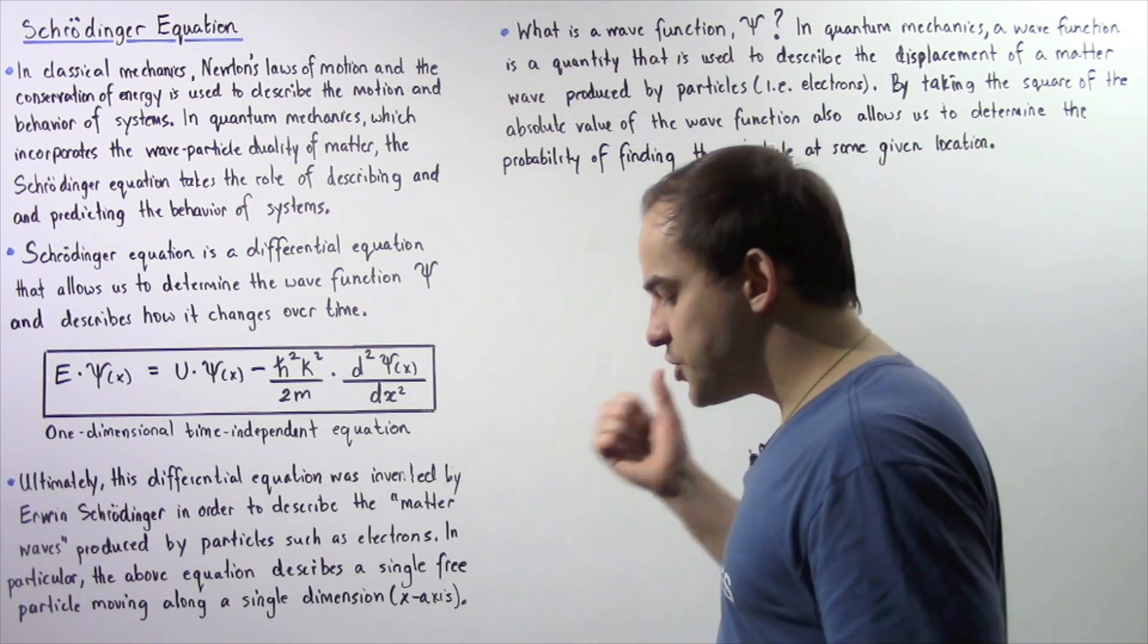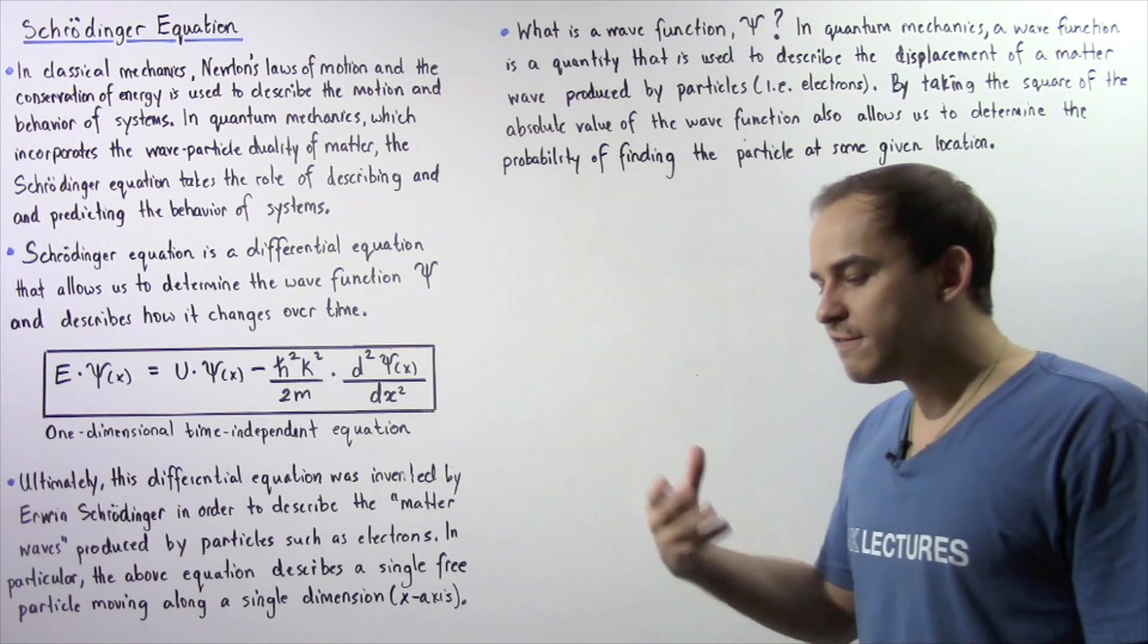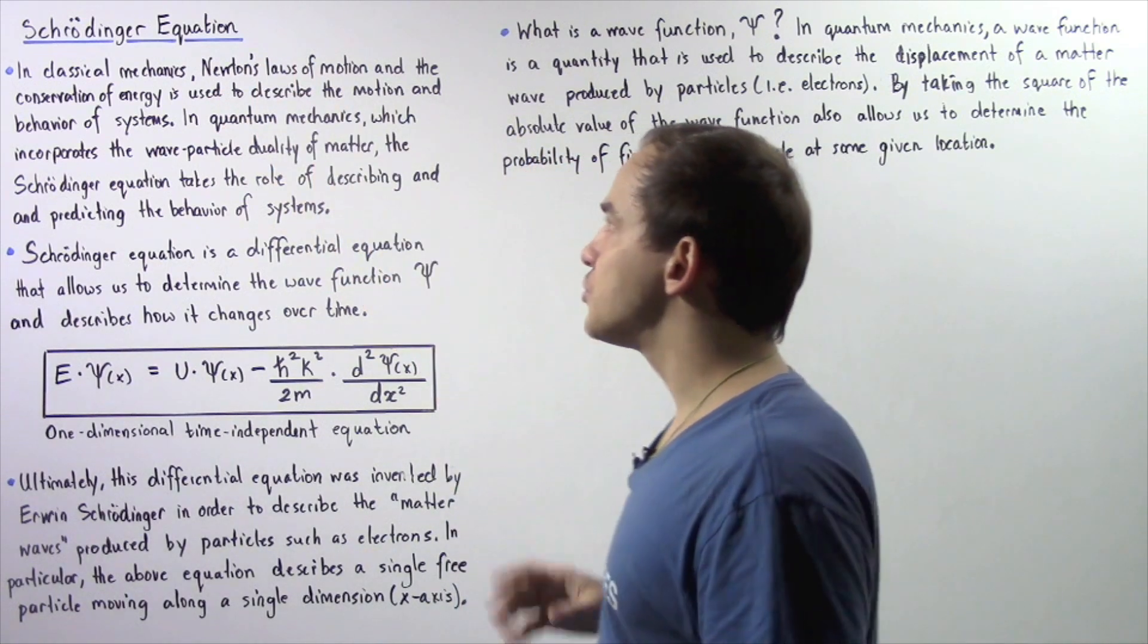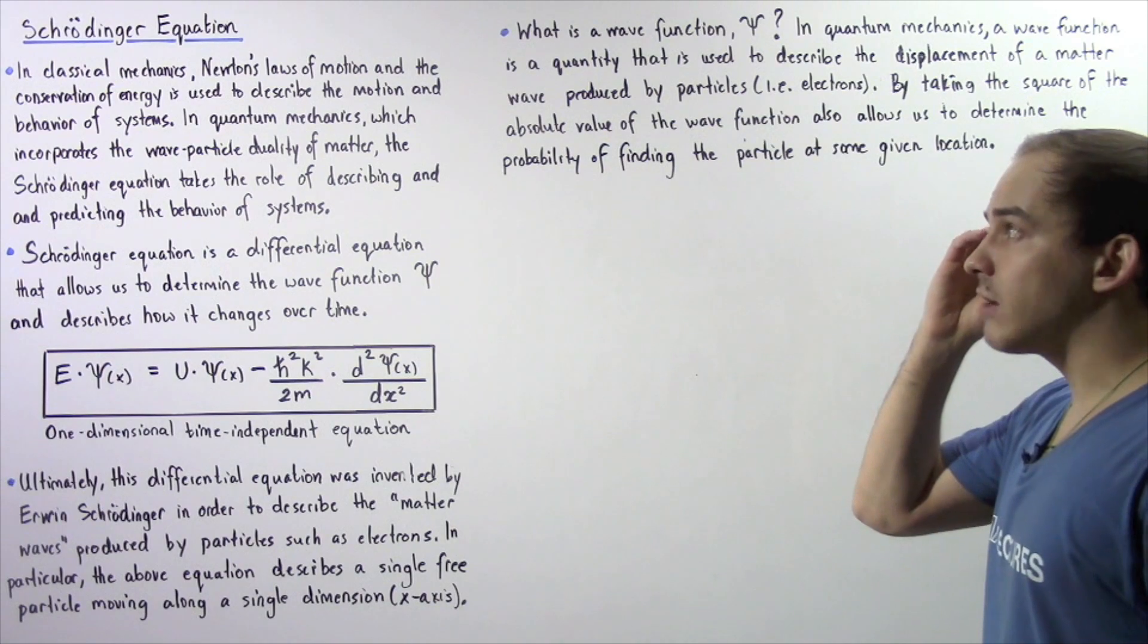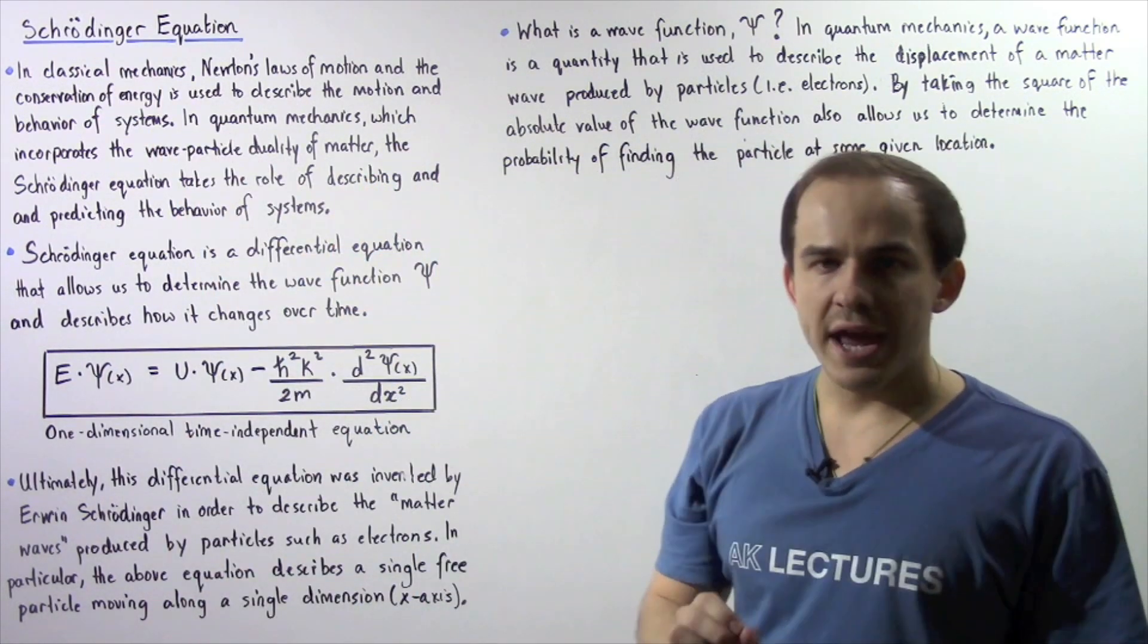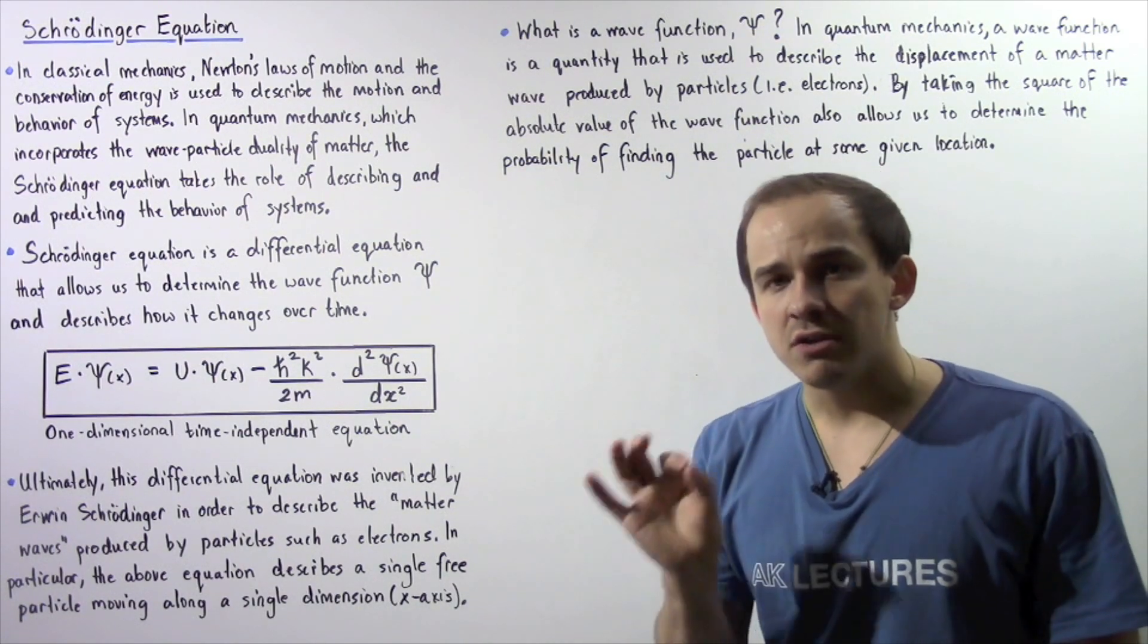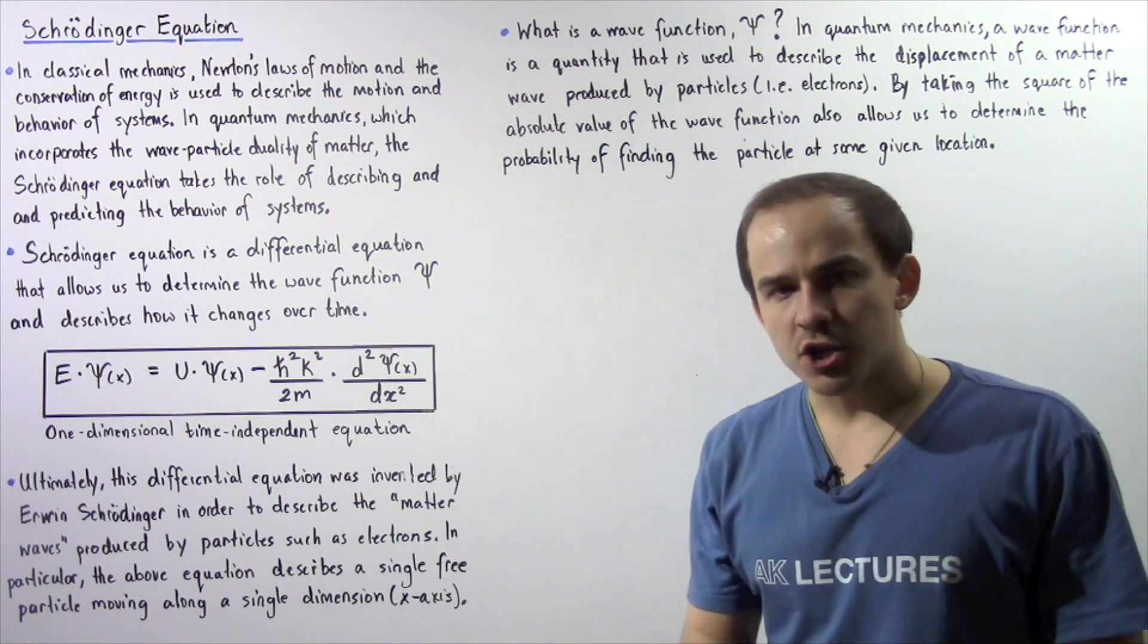So as we just mentioned, in quantum mechanics, because of the wave-particle duality of nature, we cannot use Newton's laws of motion to describe the behavior and predict the behavior of our systems. Instead, we have to use Schrödinger's equation.